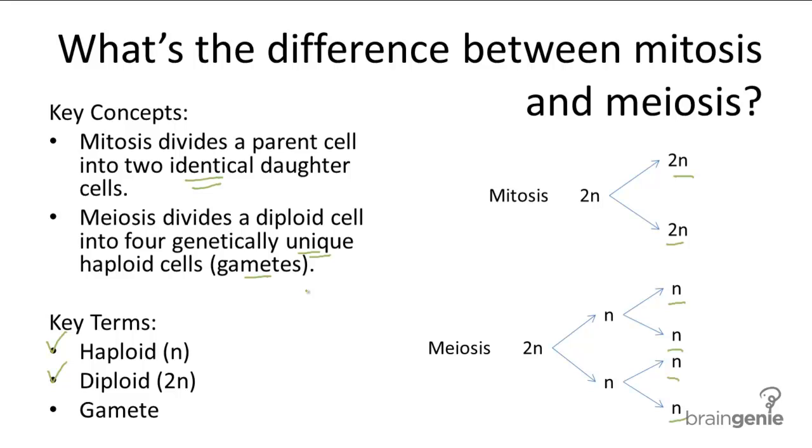The differences between mitosis and meiosis are reflected in their roles in the human body. Mitosis is basically cell replication, so it's used for tissue growth and regeneration. For example,